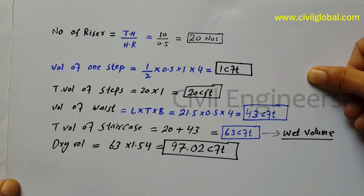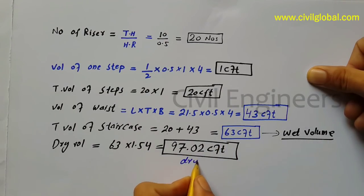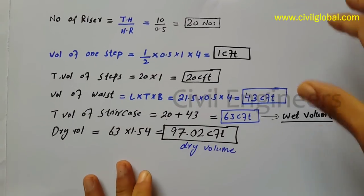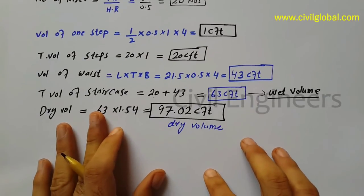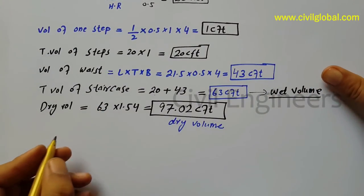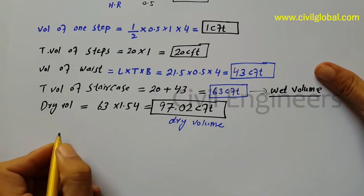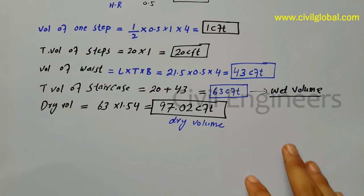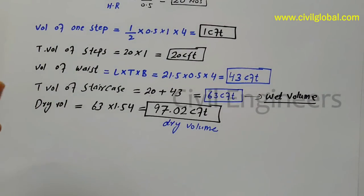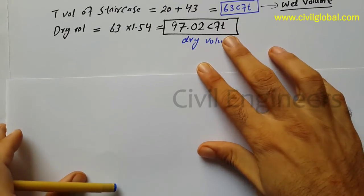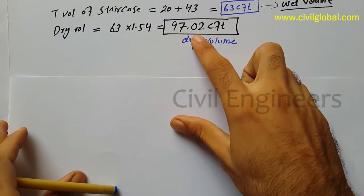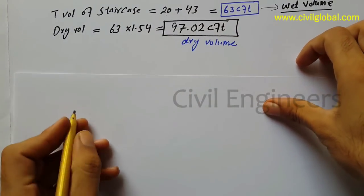This gives us the dry volume in cubic feet. In the dry volume you can find out the quantity of cement, sand, and aggregate very easily. You can see the dry volume is 97.02 cft.